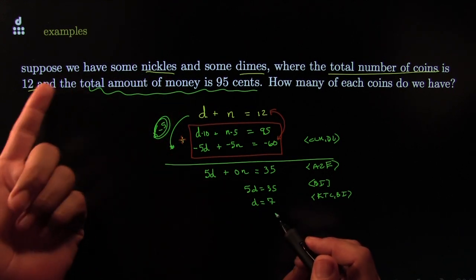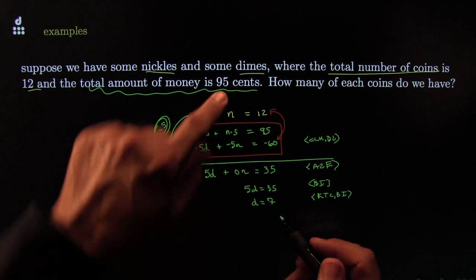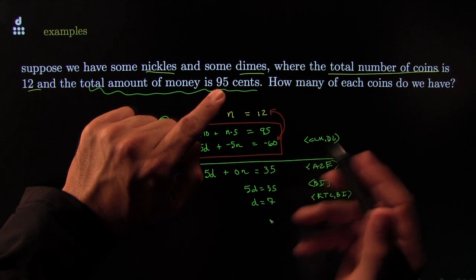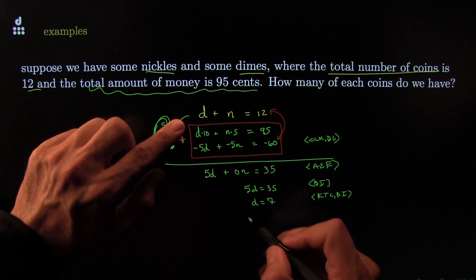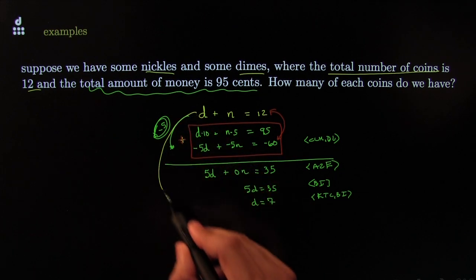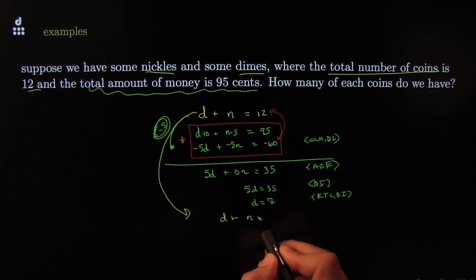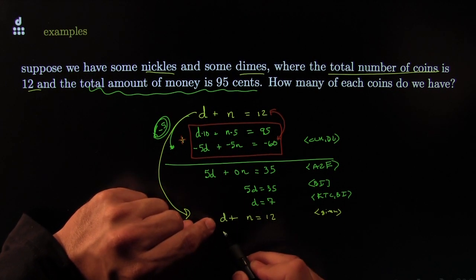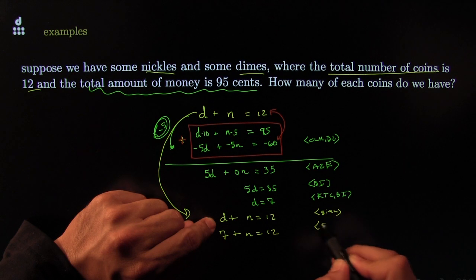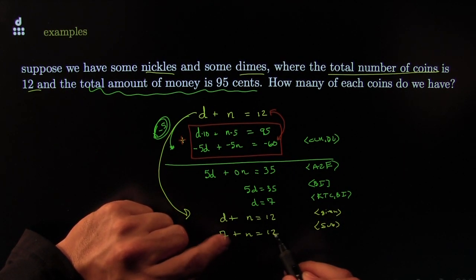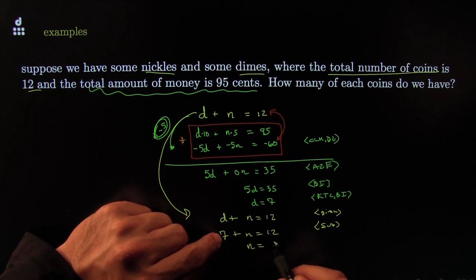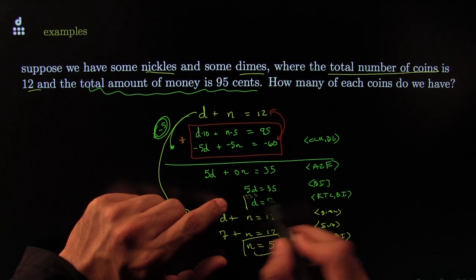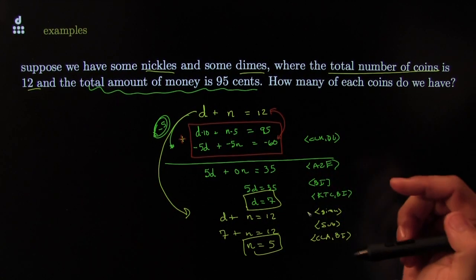You can almost eyeball the rest: 7 dimes is 70 cents, total is 95 cents, so 25 cents in nickels means 5 nickels. But let's do it the same way we've been doing. Bring down one of the original equations: d plus n equals 12, substitute d equals 7, so 7 plus n equals 12 — that's the substitution step. Subtract 7 from both sides by the cancellation law of addition, and the answer is 7 dimes and 5 nickels. Money in the bank — literally.